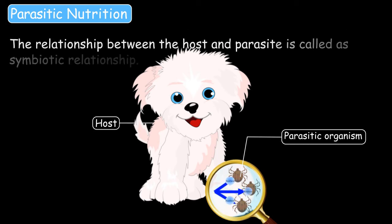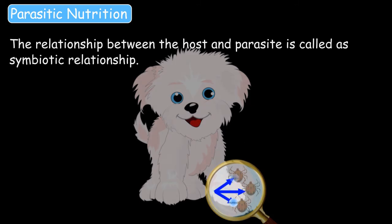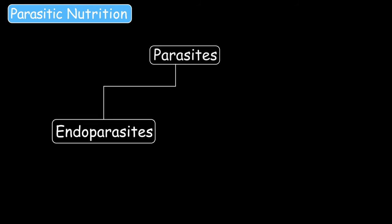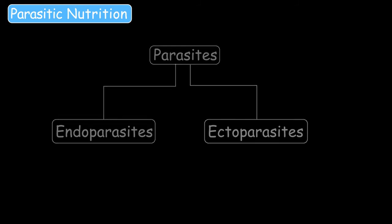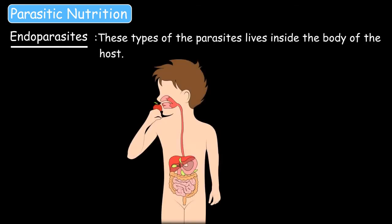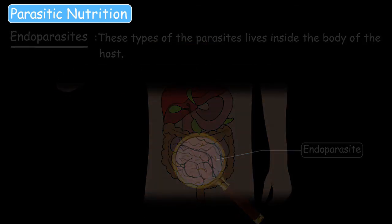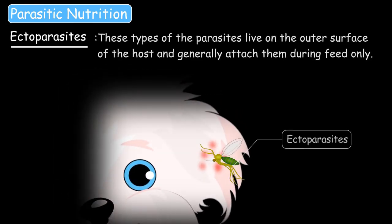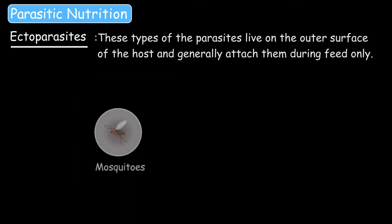The relationship between the host and the parasite is called a symbiotic relationship. Parasites can be of two types: endoparasites and ectoparasites. Endoparasites live inside the body of the host. Ectoparasites live on the outer surface of the host and generally attach themselves during feeding only — for example, mosquitoes and ticks.